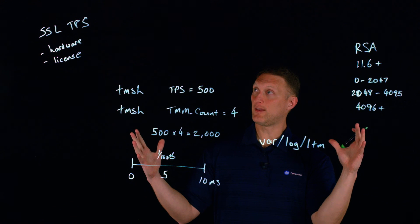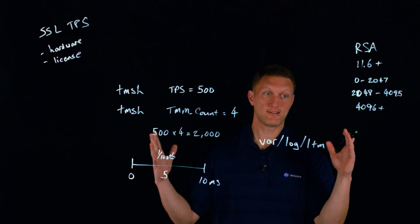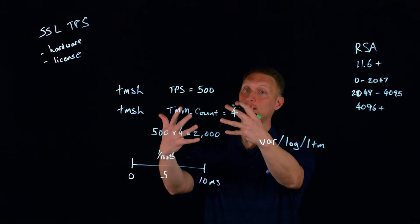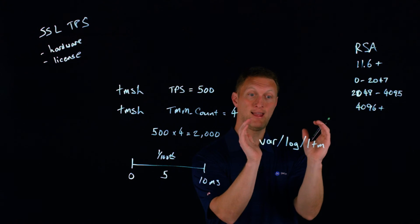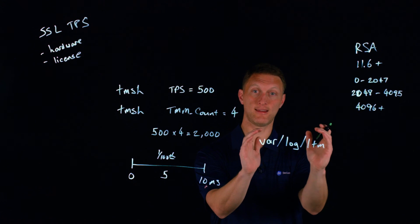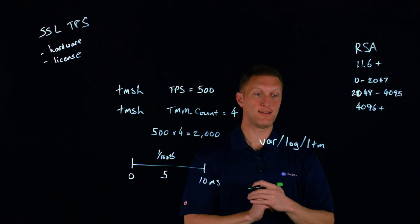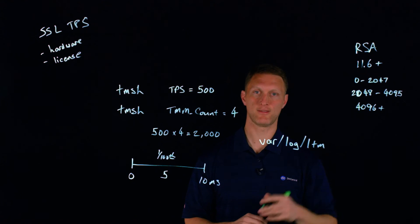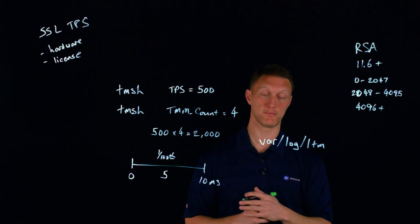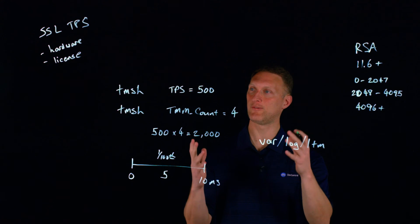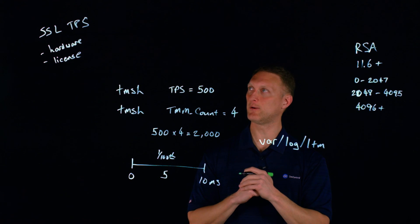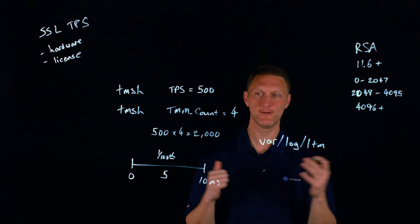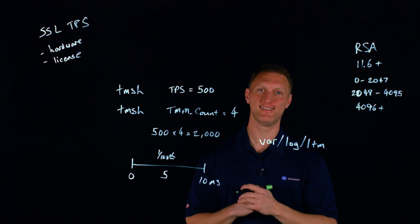So those are a few things related to SSL transactions per second: how it's done, how the Big IP looks at it, how it calculates things, how it can let you know if you have exceeded your number, and then a couple little tidbits on RSA if you have one of the newer versions 11.6 or beyond. I hope you've learned a few things here today, hope you've enjoyed this transactions per second SSL style lightboard lesson video, and we'll see you guys out there in the community.